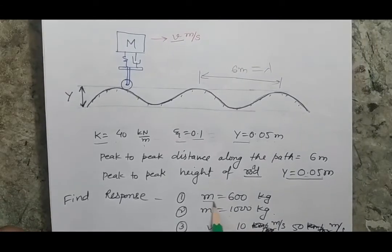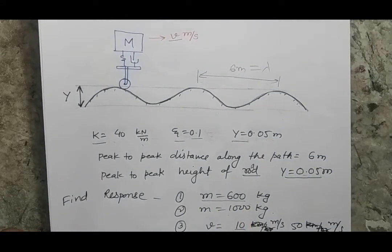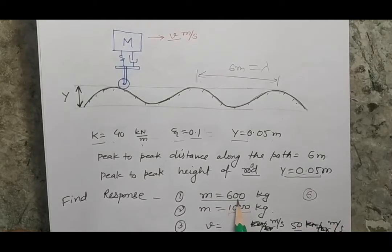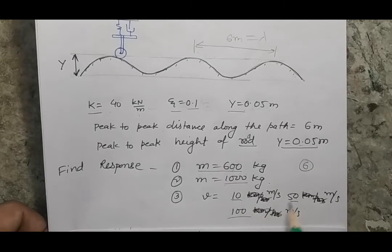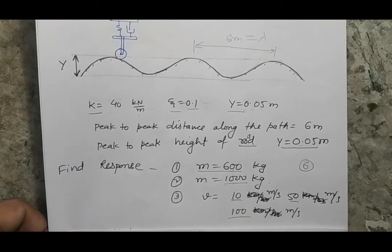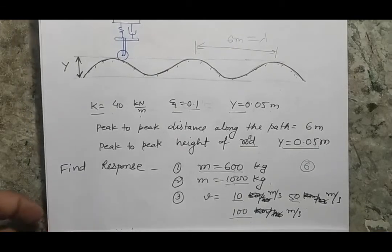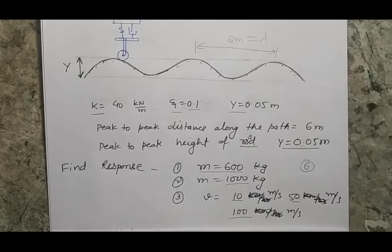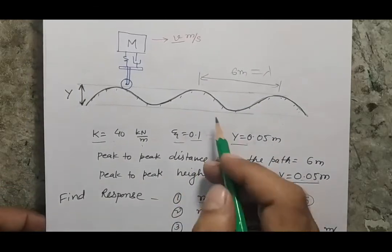Different cases are given: Case 1 assumes mass 600 kg with velocities 10, 50, and 100 m/s. Case 2 assumes mass 1000 kg with velocities 10, 50, and 100 m/s — so there are six cases in total. In this session I will explain one case and you can extrapolate the methodology to solve the others.